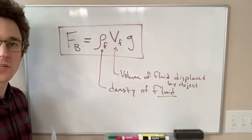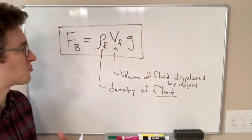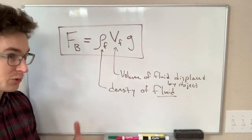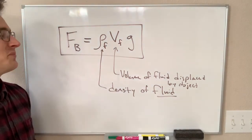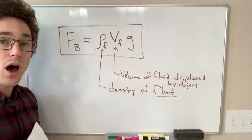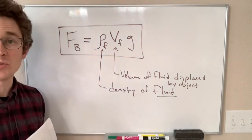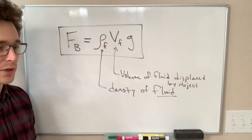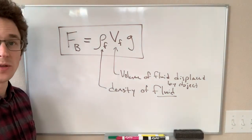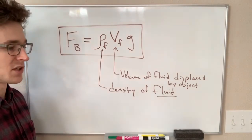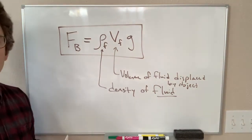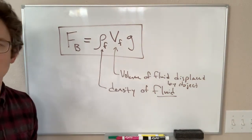So if we have an object in a fluid, it is displacing the fluid — that is, it's taking up space that otherwise the fluid would be taking up, and that amount of volume is what goes into the equation. Often this is going to be the volume of our object if it is completely immersed in the fluid. However, we can have objects that are only partially in a fluid, only displacing part of their volume's worth of fluid, and in that case we would use that partial volume in this equation. We'll get to some examples of this in a little bit.